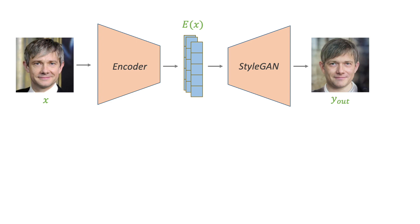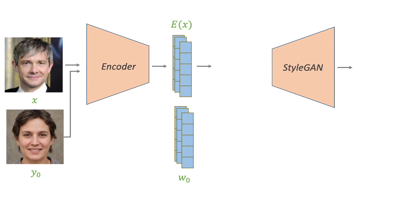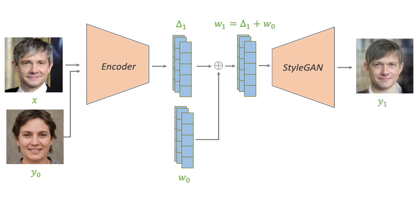Going back to standard encoders, we allow the encoder a single shot for getting the inversion correct, and this may be a bit hard to do. With ReStyle, we'll help the encoder with some initial guess for the inversion — say the average latent code W0 — and pass the corresponding initial reconstruction along with the input image to our encoder. Rather than asking the encoder to return the inversion directly, we ask it to return a delta with respect to this initial guess. Adding this delta to our initial guess gives us a new prediction for the inversion, and passing this to StyleGAN gives us our reconstruction — though there is still room for improvement.